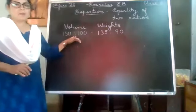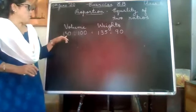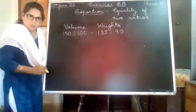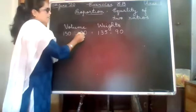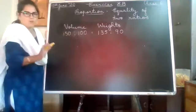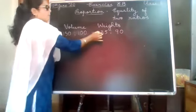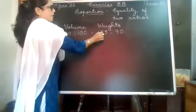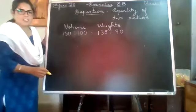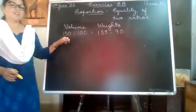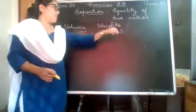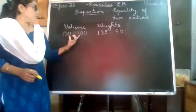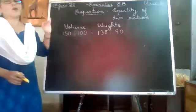Here I have already put up an example. Say there is 150 litres of water and here there is 100 litres of water. So this is the volume of water and this is the weight. If there is 150 litres of water, it weighs 135 kg. So this is the weight of 150 litres of water, and this is the weight of 100 litres of water. So how do I know that these are in proportion?